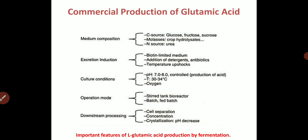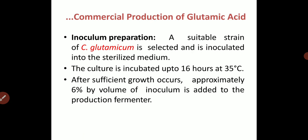During downstream processing, after production is over, the steps for glutamic acid recovery include cell separation, concentration, crystallization, and pH decrease. The inoculum is prepared with a suitable strain of Corynebacterium glutamicum, inoculated into sterilized medium, and incubated up to 16 hours at 35°C. After sufficient growth, approximately 6% by volume of inoculum is added to the production fermenter.